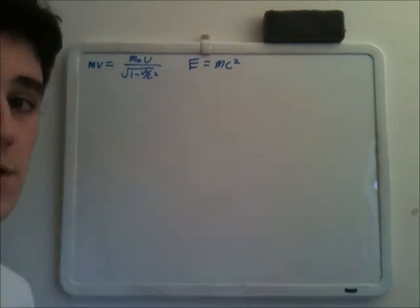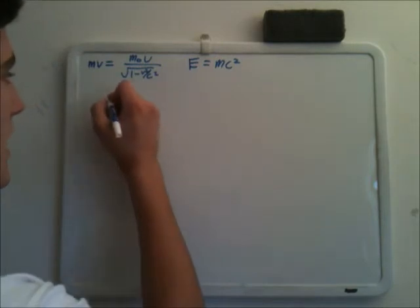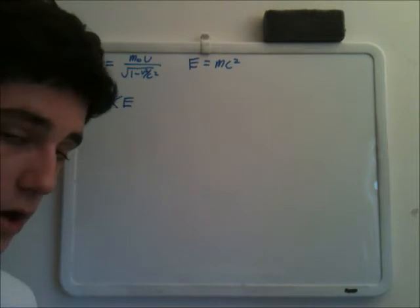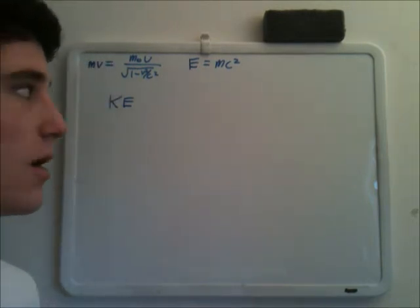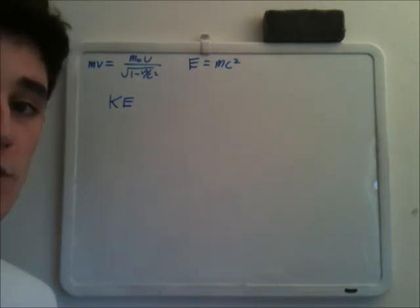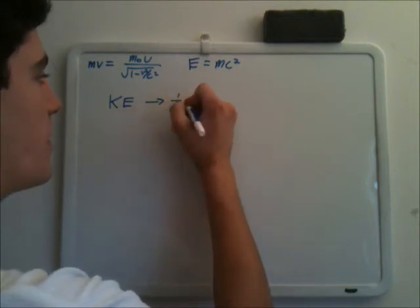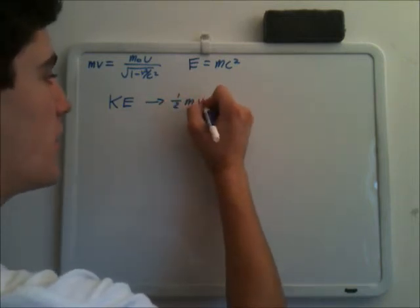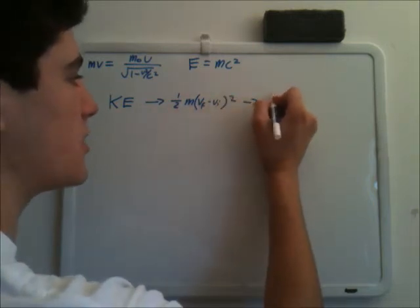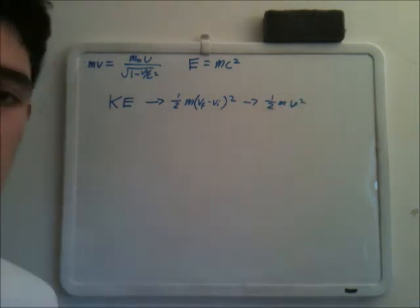So let's start with talking about the relationship between energy and momentum. Let's look at kinetic energy. We know that kinetic energy is the work that it takes to accelerate a body of mass m from one velocity to another velocity. And that can be represented as one-half m v_f minus v_i squared, or just simply one-half m v squared if the body is starting at rest.